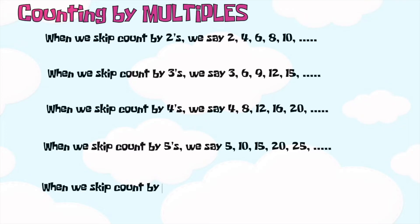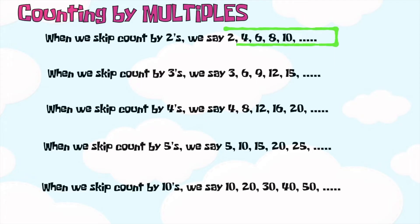And lastly, when we skip count by tens, we say ten, twenty, thirty, forty, fifty, and so on. So, when you say two, four, six, eight, ten — that is the multiples of two.